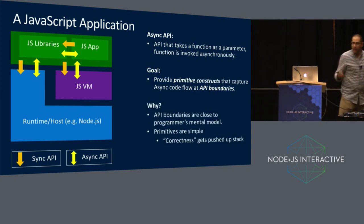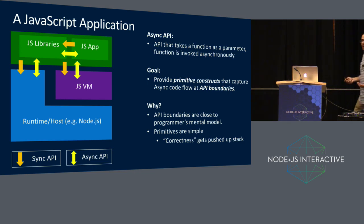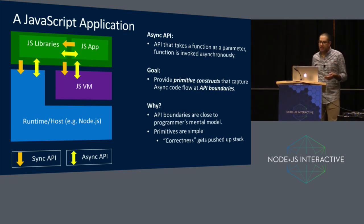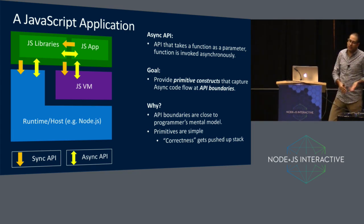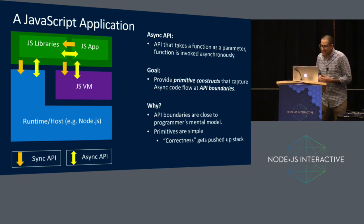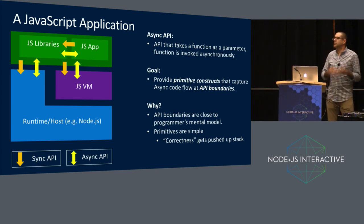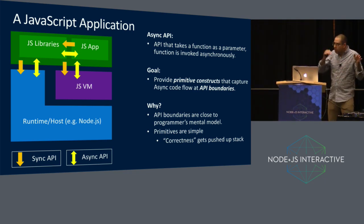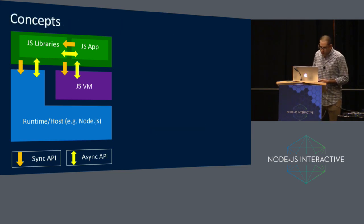I say primitive constructs because primitive constructs are easy to reason about and easy to get correct. When things are incorrect, you can push it up the stack. The other issue is you want to capture this stuff at the API boundaries because that's where the programmer has their understanding of what's happening — that's where they're thinking about what their program is doing. So there are two concepts we'll define here.